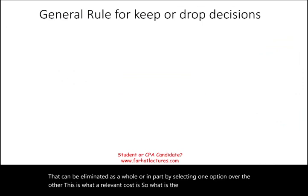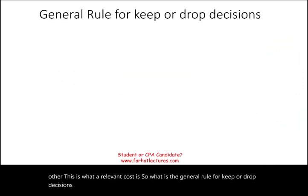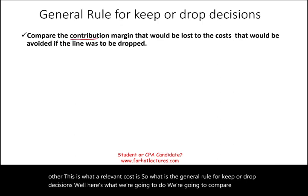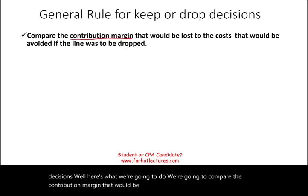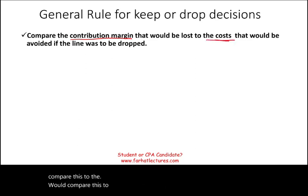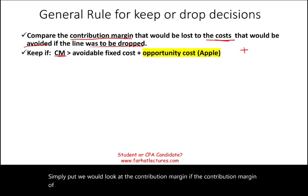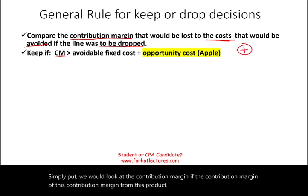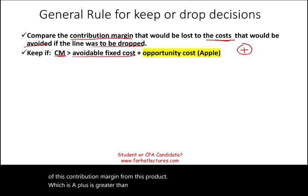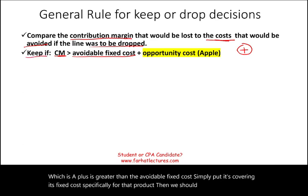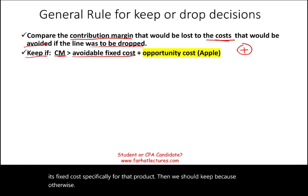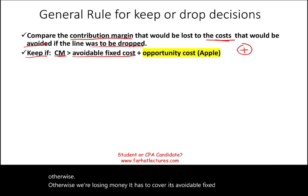What is the general rule for keep or drop decisions? We're going to compare the contribution margin that would be lost if we discontinued this product to the costs that would be avoided if the line was dropped. If the contribution margin from this product is greater than the avoidable fixed cost — meaning it's covering its fixed cost specifically for that product — then we should keep it. Otherwise, we're losing money. It has to cover its avoidable fixed cost and opportunity cost.